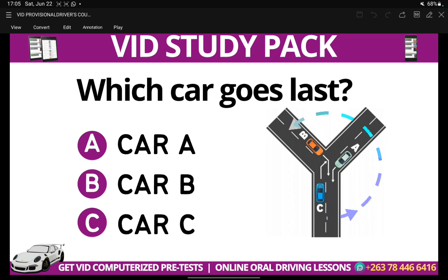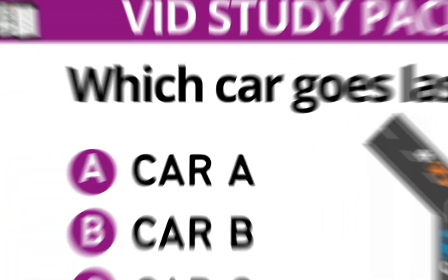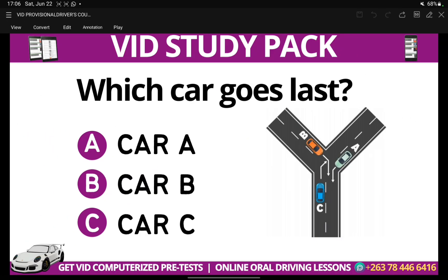Without wasting much time, let us begin solving this car diagram. This is a Y-car diagram. The question states: which car goes last? We're going to find out which car goes last. As always, you have to apply the first road rule — give the right of way to traffic approaching from your right. We have three cars here: Car B, Car C, and Car A.